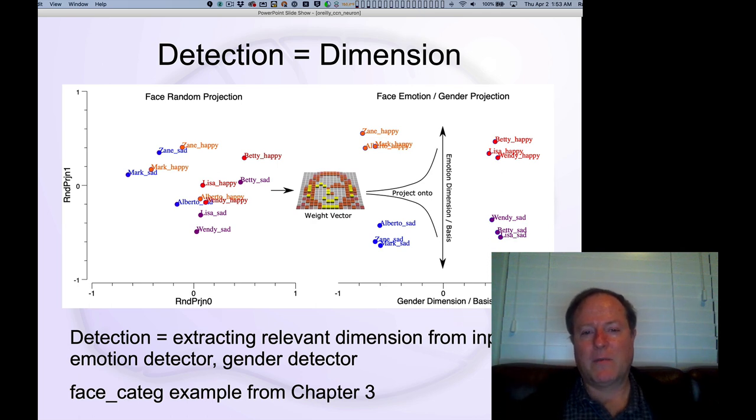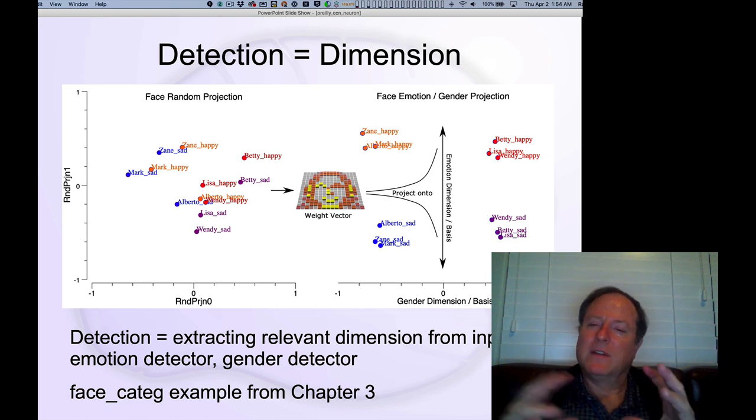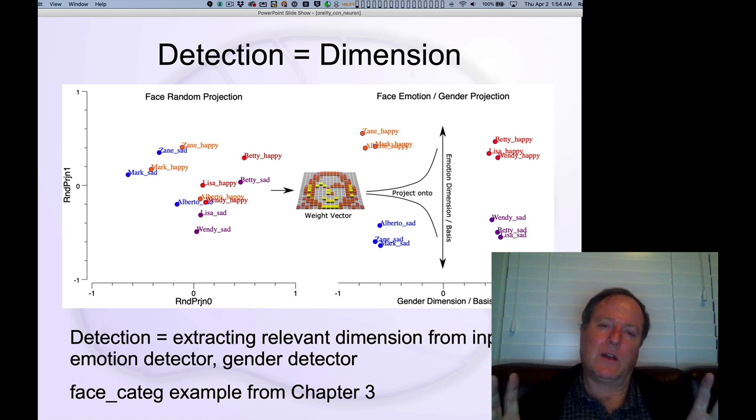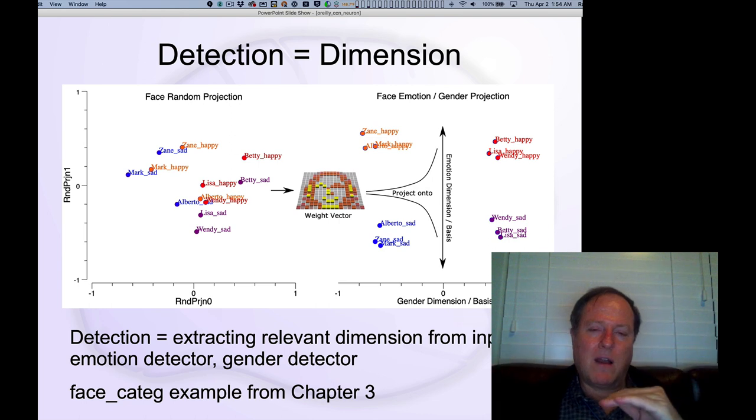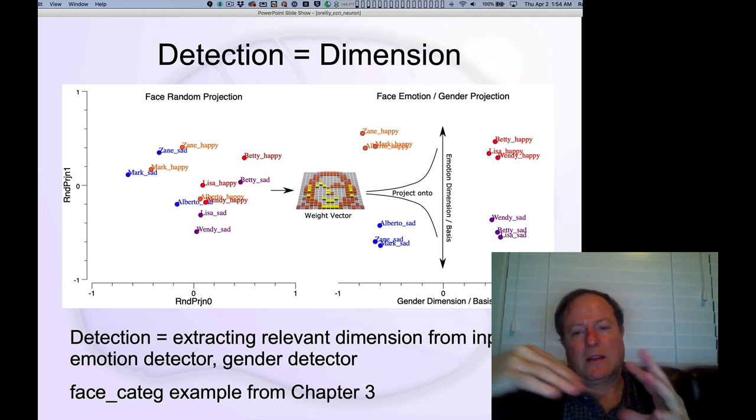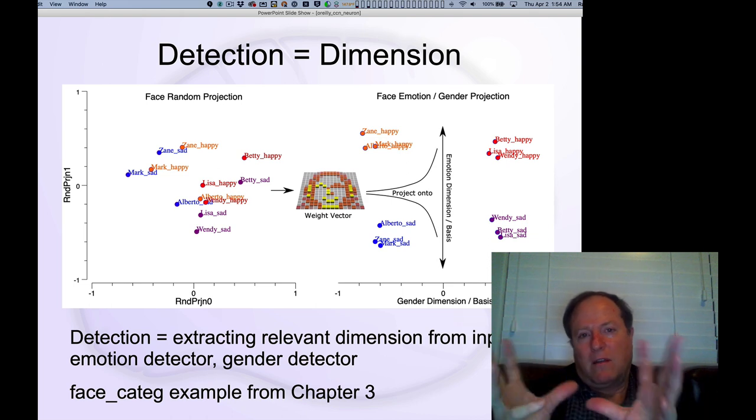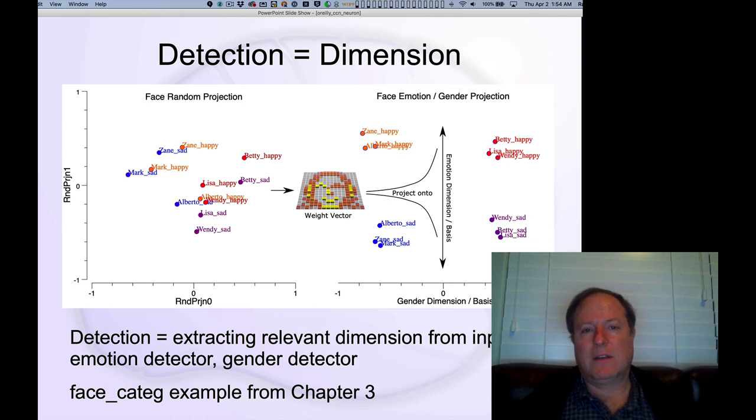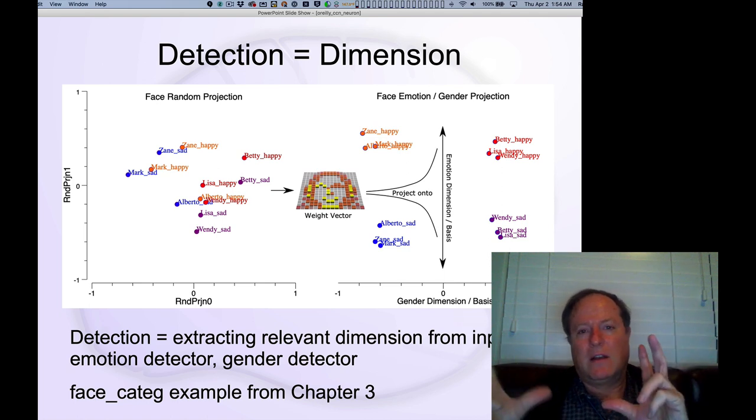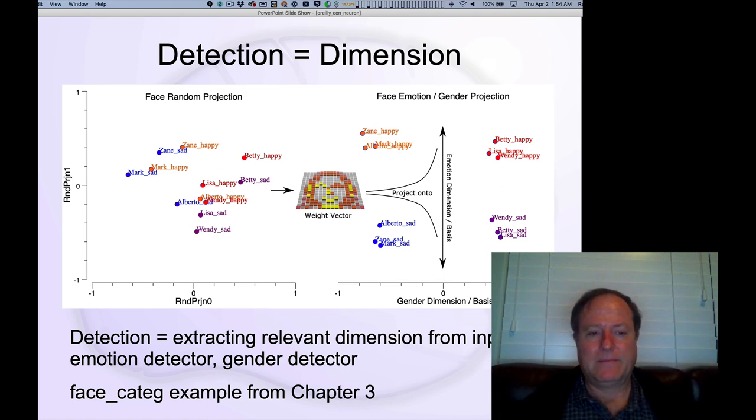And that's another way of thinking about what a neuron is doing in the brain. And it's a more continuous way of thinking about the detection process rather than this discrete, is it there or not? It's more continuous, like transforming the input space into a different rotation of that high dimensional space onto axes or dimensions that are much more behaviorally relevant. So that's a different way of thinking about it.